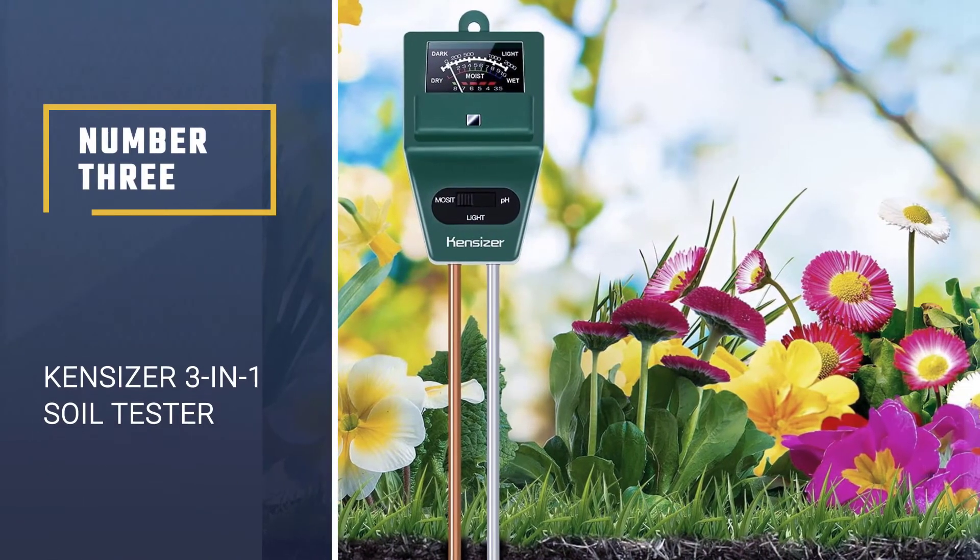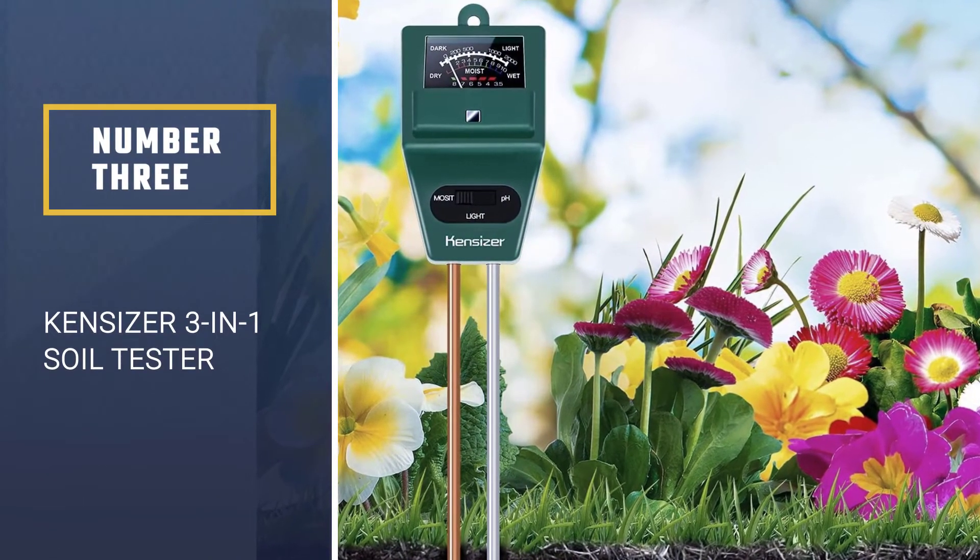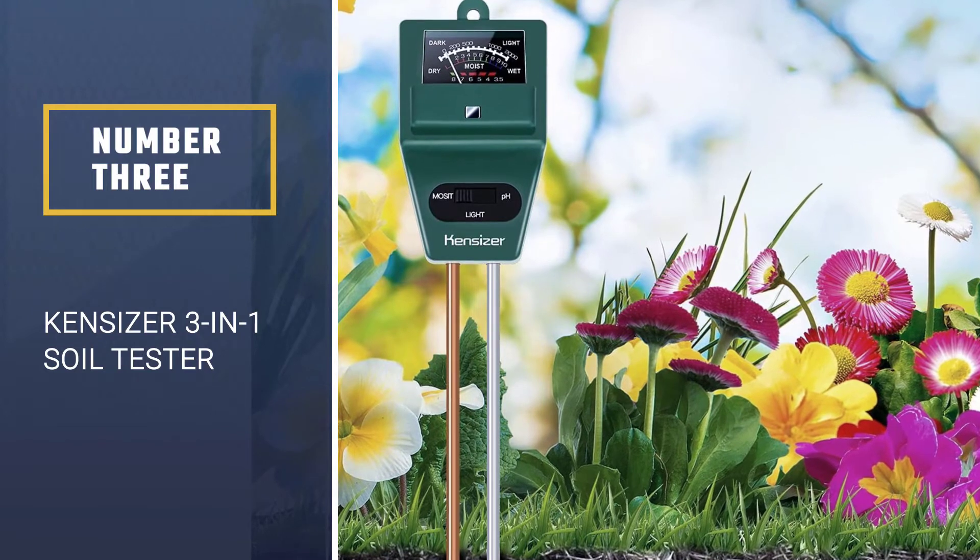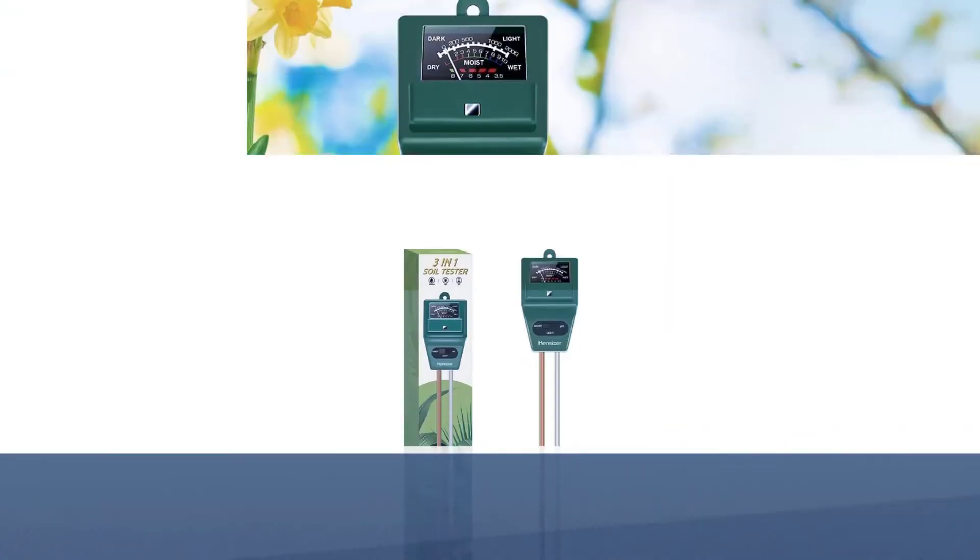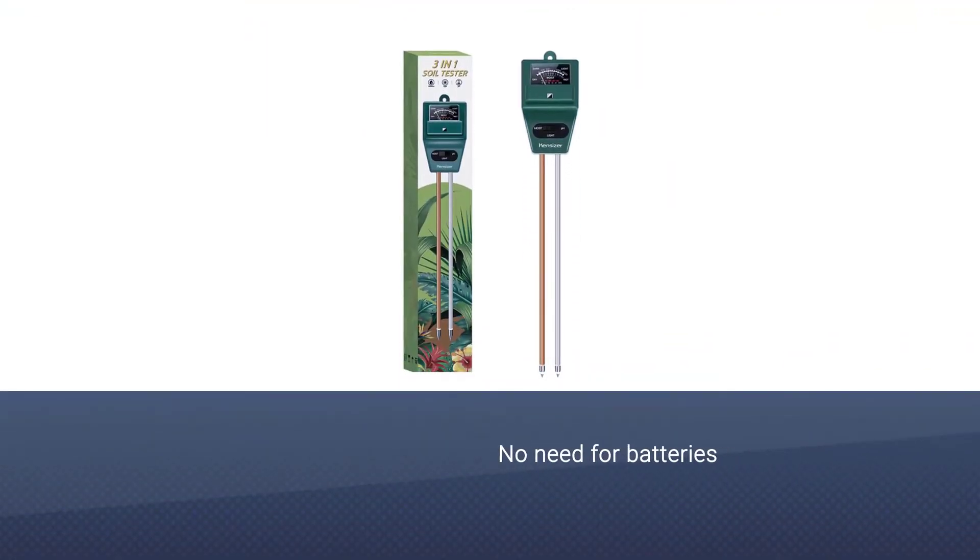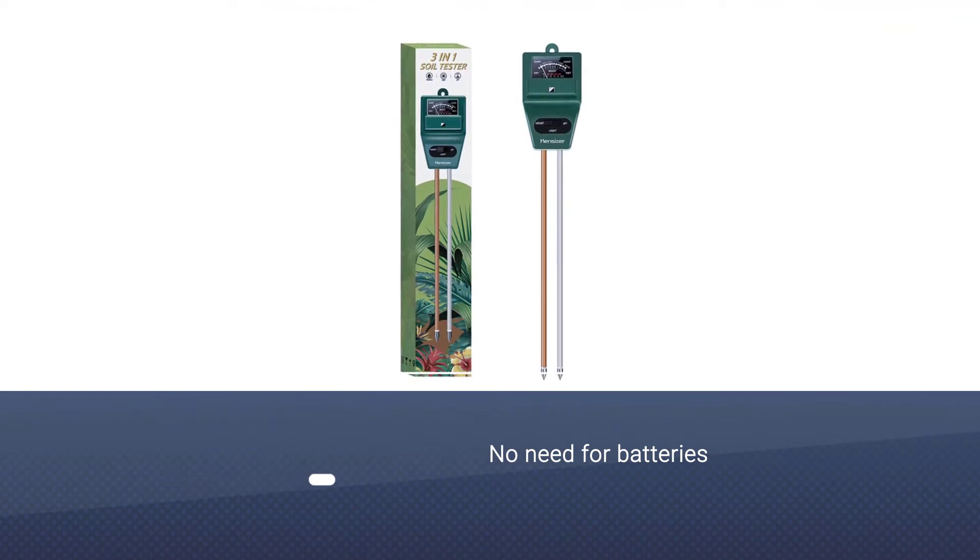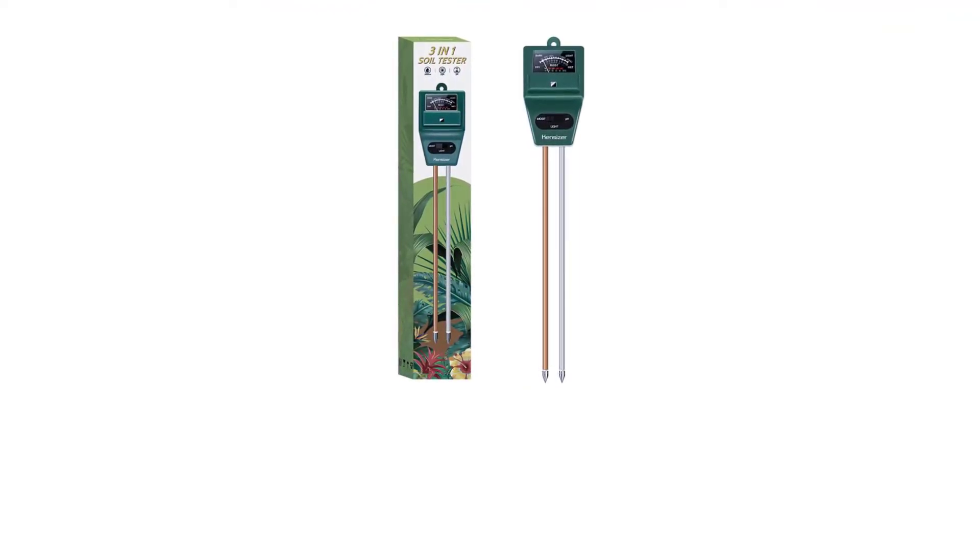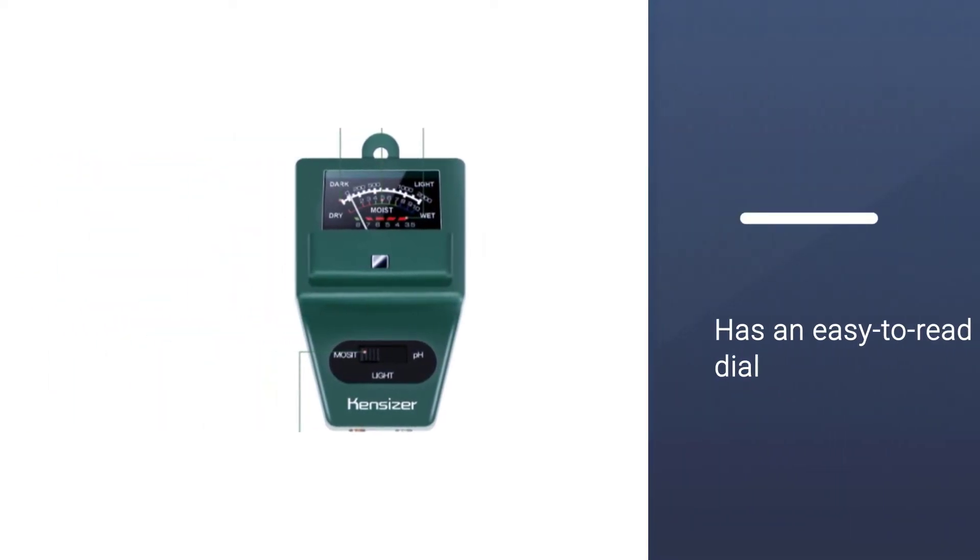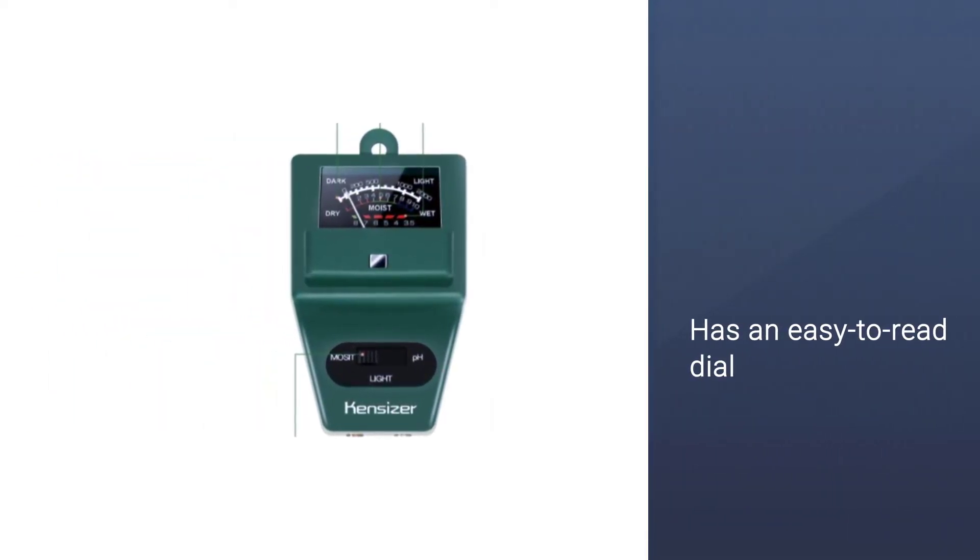Number three: Kensizer Three-in-One Soil Tester. Whether you are an outdoor gardening enthusiast or an indoor plant lover, the Kensizer three-in-one soil tester makes it so easy to understand the needs of your plants. There is no need for batteries. Flick the switch to select your preferred mode—pH, moisture, or light—and watch as the precise needle pointer moves to the right readings on the easy-to-read dial.